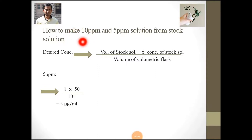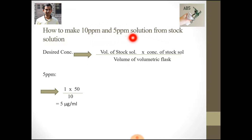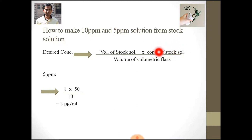Now, how do we make a 10 ppm and 5 ppm solution from this 50 ppm stock solution? There is a formula: V1 (volume of stock solution to pipette out) multiplied by C1 (concentration of stock solution) equals V2 (volume of volumetric flask) multiplied by C2 (desired concentration).